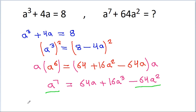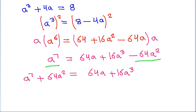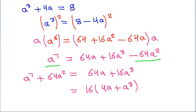So, from here we can get a to the power 7 minus 64a squared is equal to 64a plus 16a cubed. Now if we take 16 common, then we get 4a plus a cubed, and we know that a cubed minus 4a is equal to 8.